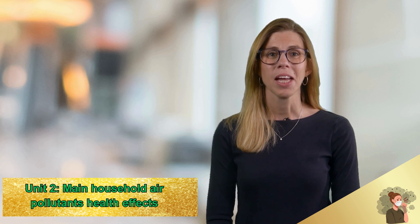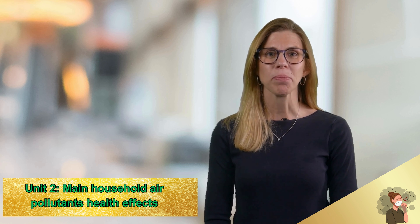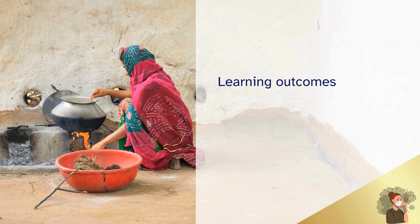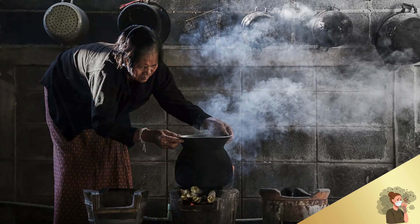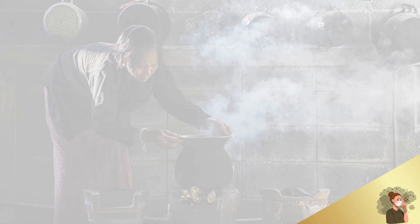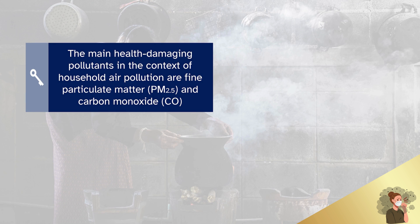Welcome to Unit 2: Main Household Air Pollutants and Health Effects. By the end of this unit, you will recognize household air pollution health effects. The main health-damaging pollutants in the context of household air pollution are fine particulate matter and carbon monoxide. Now let's look at their main health effects.